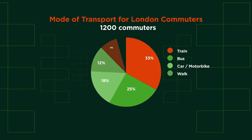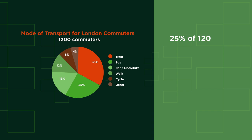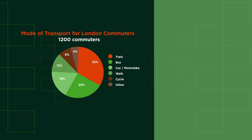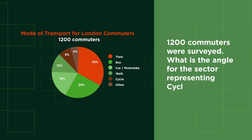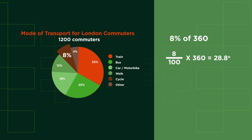Sometimes questions might give us a pie chart with a percentage already on, and then ask us to find what this represents. So we know that 25% of the 1200 people travelled by bus, so we just need to find 25% of 1200, which is 300 people. Or they could ask what angle a sector represents — the cycling sector is 8% of the whole circle, so 8% of 360 is 28.8 degrees.